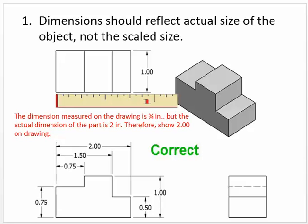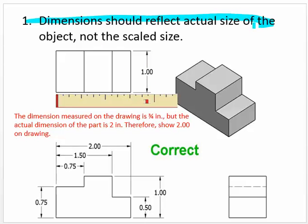The first rule is that dimensions should reflect the actual size of the object, not the scaled size. This basically means we don't want to measure it after we've drawn it. We want to measure it before we draw it, and no matter what size we draw it, we put down the actual size — the actual size, not the scaled size of the object.